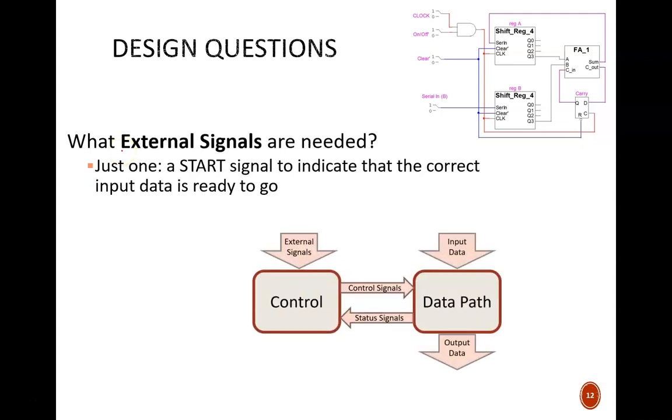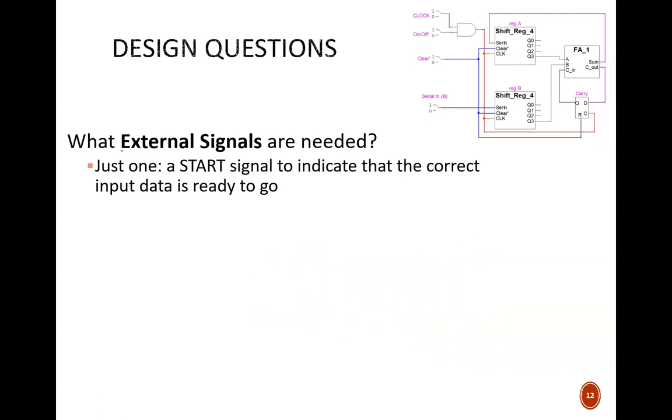The next arrow is external signals. In this case, only one external signal is needed, a start signal. It sounds simple, but it's important. The machine would be useless if it added all the time or only at random selected times.